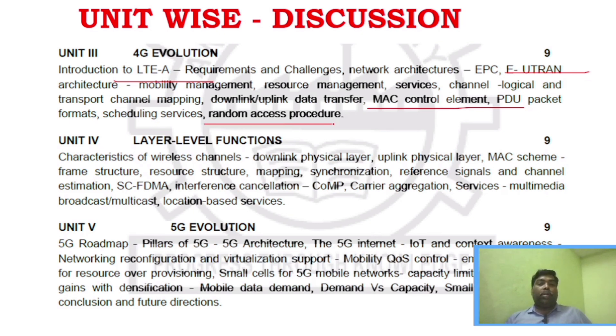E-UTRAN is a very key area. Similarly, random access procedures are important. Unit 4 is very important — MAC schemes are very important. Similarly, interference cancellation and carrier aggregation are very important areas.